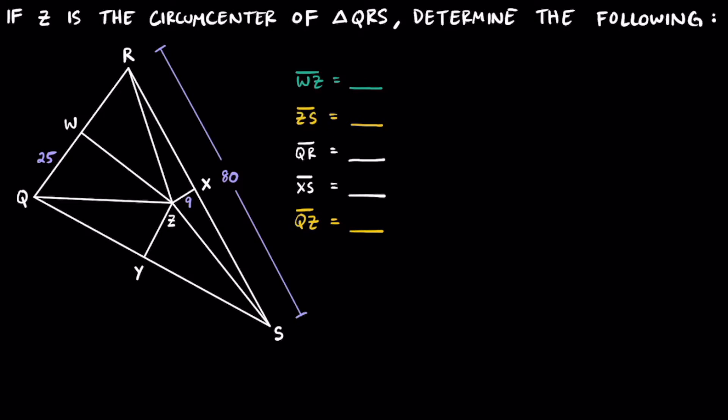Let's try to simplify down the concept of circumcenters. First off, take a look at this triangle, triangle QRS, which is this thing over here.